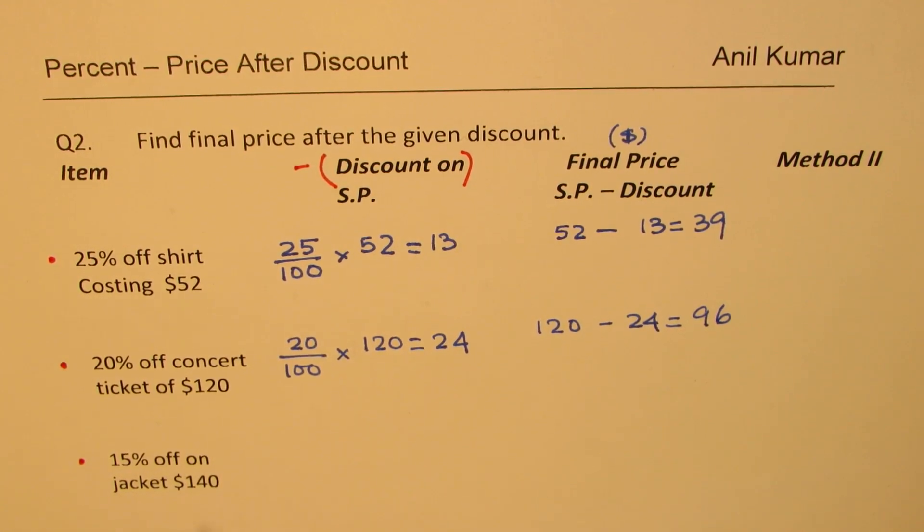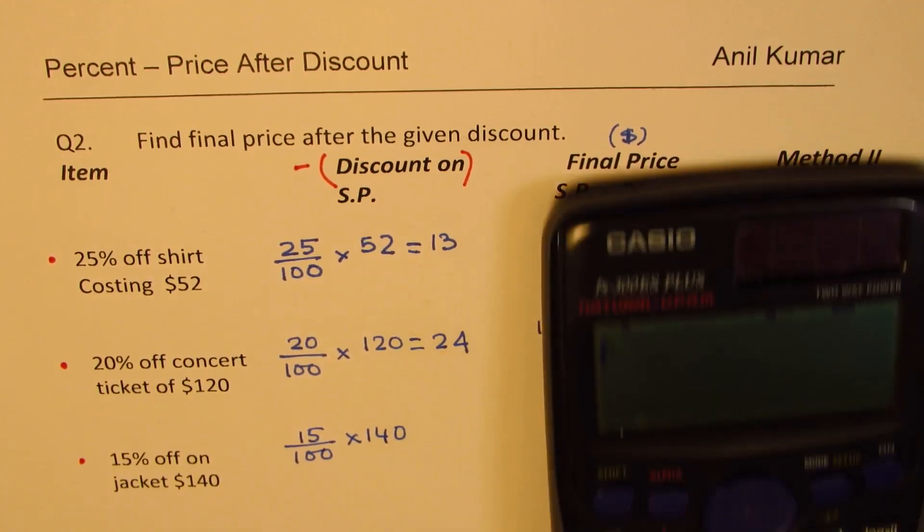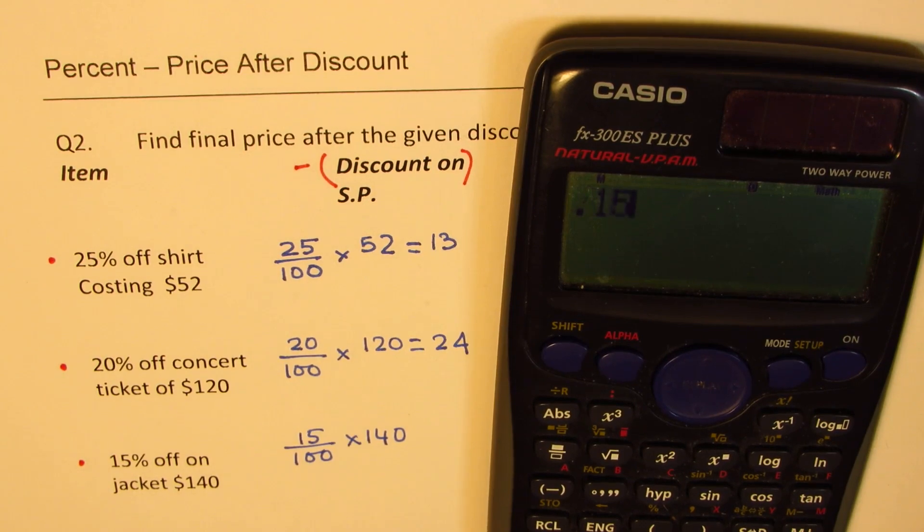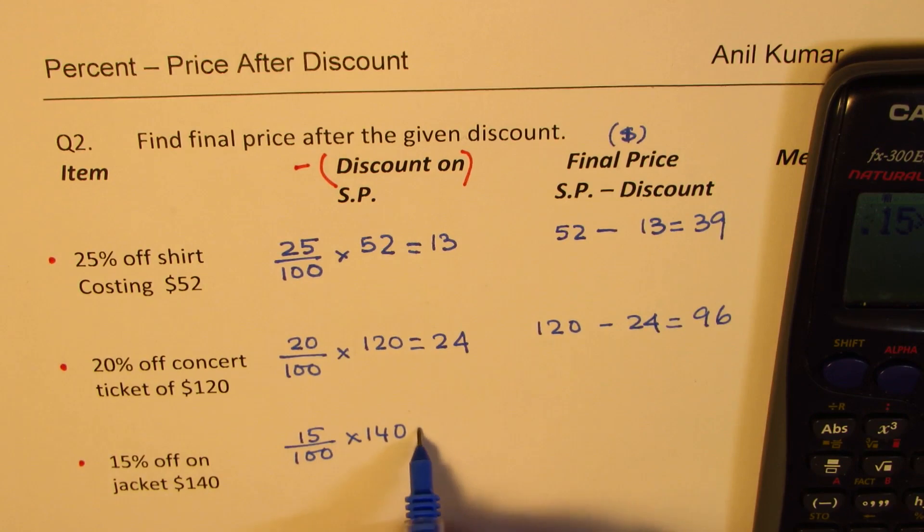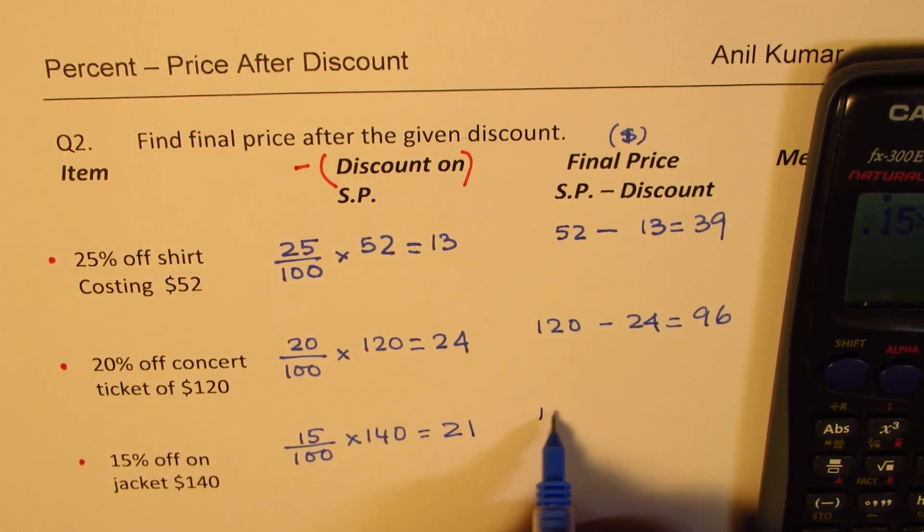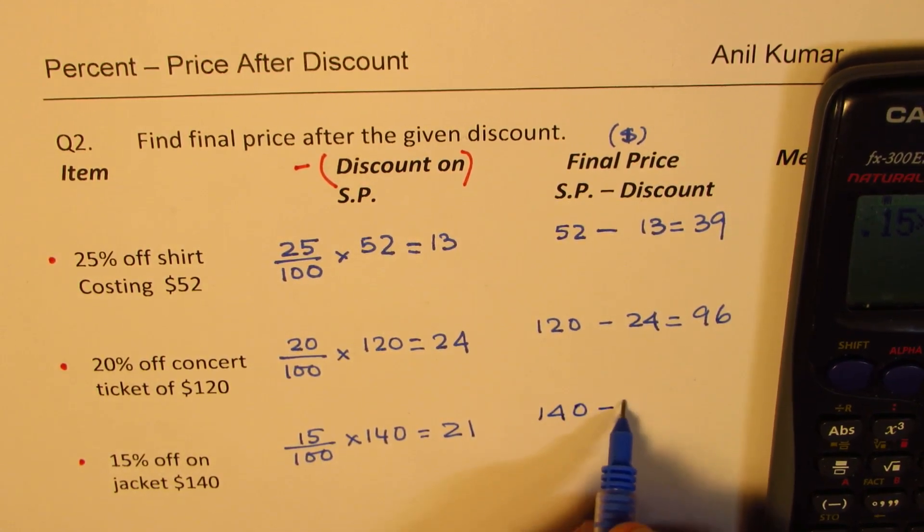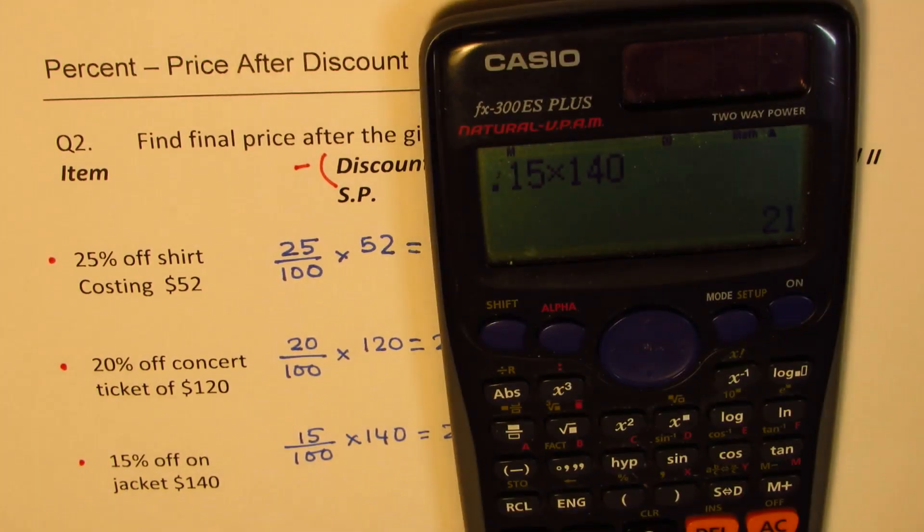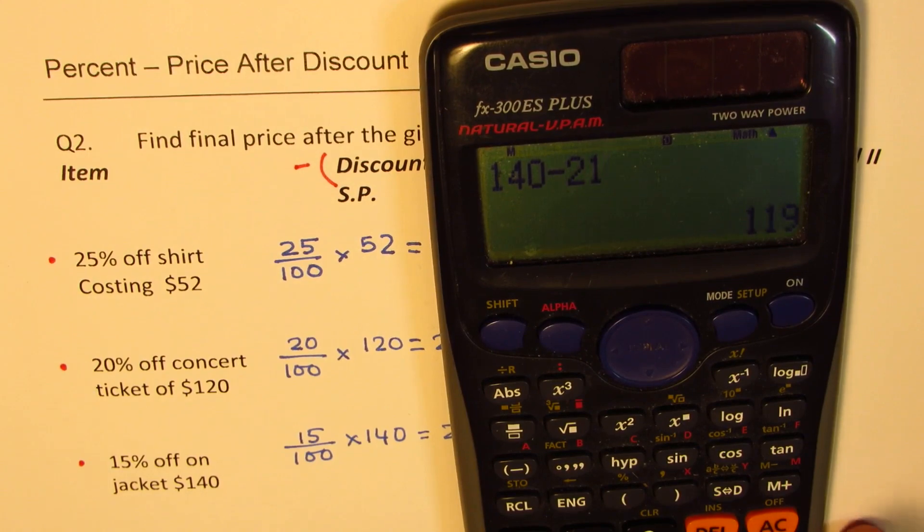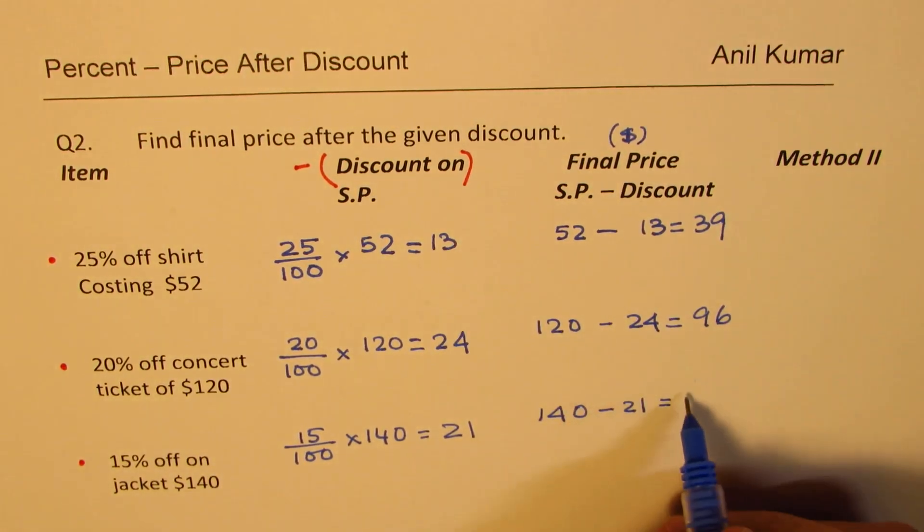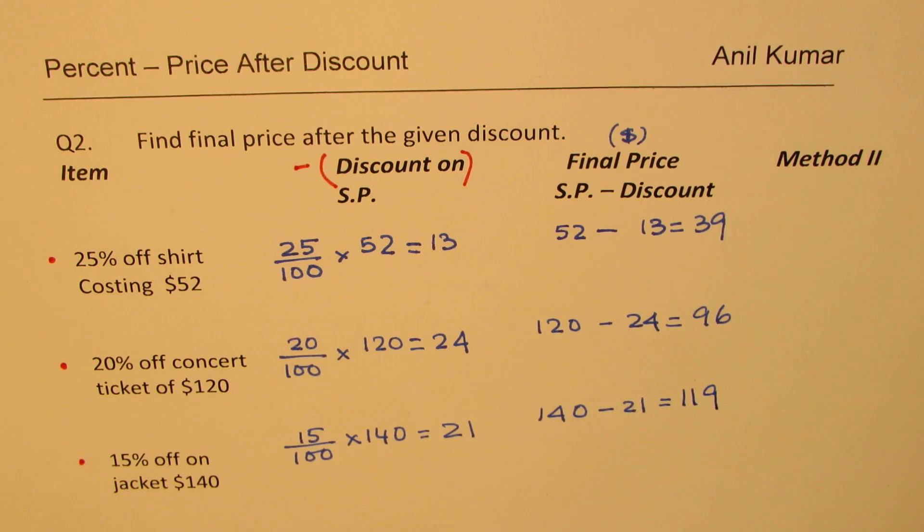Now, 15% off jacket price of $140. 15% means 15 out of 100 times 140. Let's do it. You could also write 0.15. So, you can write 0.15 times 140. So, at least one step is lesser. We get 21. Now, once we get 21, we have to take away from 140 this value of 21 to get our answer. So, we get 140 minus 21 equals to 119. So, we get a price of 119. Does it make sense to you?